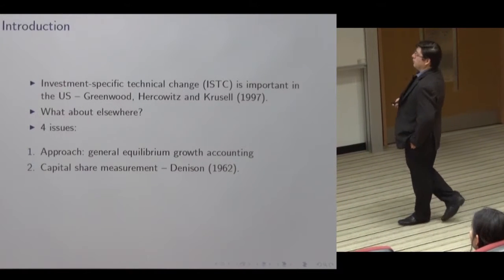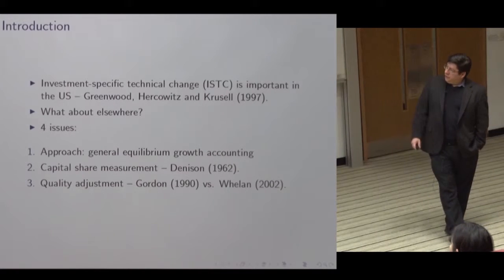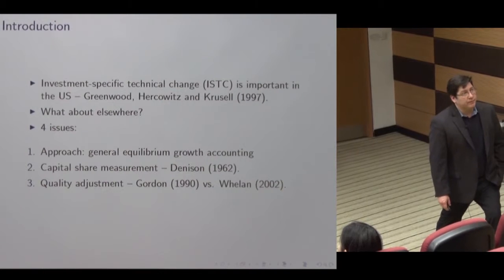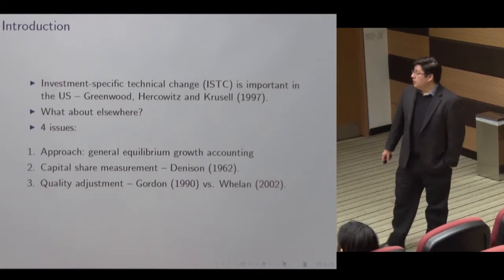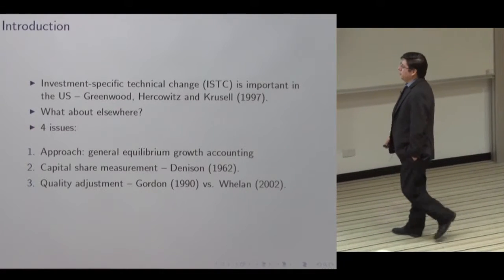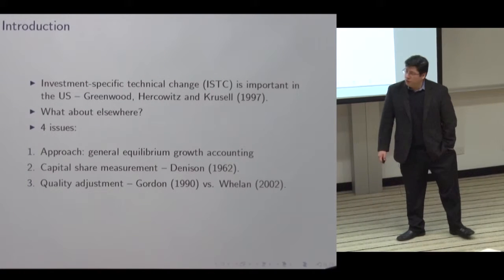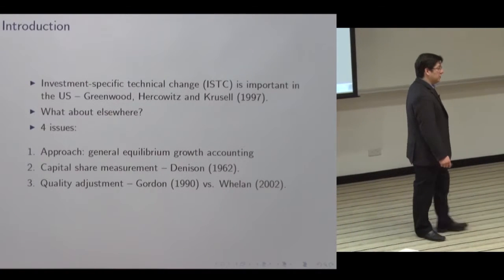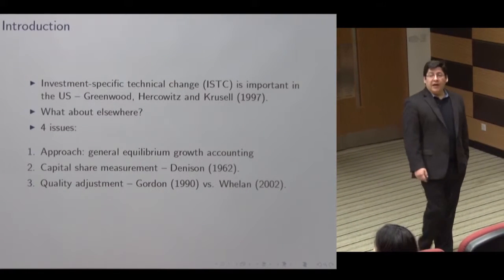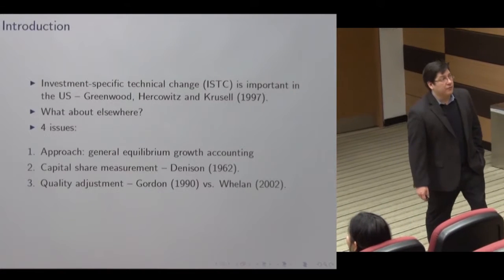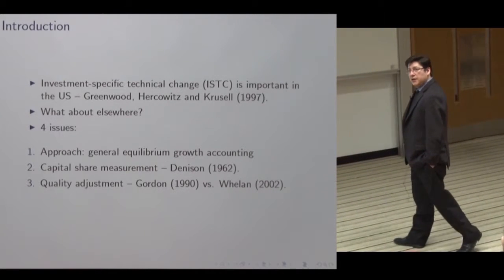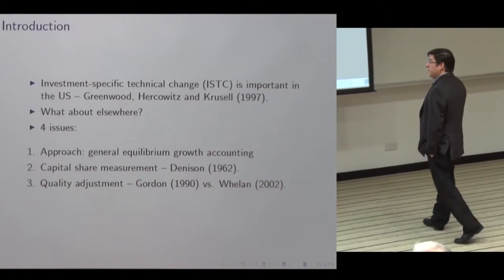It turns out that doesn't matter much, but when we started, that was something we were particularly worried about. That means the model we're going to use is not the same as Greenwood, Hercowitz, and Krusell — we want to make sure natural resources are included. We actually have two models of natural resources. The third issue is whether, when measuring the price of capital and the change in the price of capital, you should be adjusting for quality, and there's not really a consensus on that.